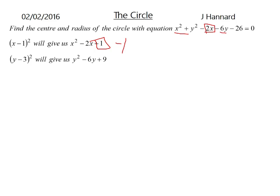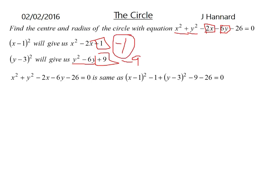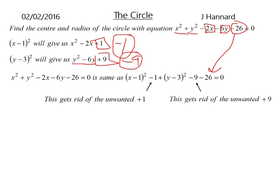So it will actually be minus 1 when all is said and done. Same with the Y minus 3. We half the 6Y to get the Y minus 3. And that will give us Y squared minus 6Y plus 9. So we've got our Y squared. We've got our minus 6Y there. We've also got this plus 9. And we don't want that plus 9, so we have to take away that unwanted square. That is the same as X minus 1 squared minus that 1 there added to Y minus 3 squared minus that 9 there and minus the 26. That remains constant through all this. And that equals 0.